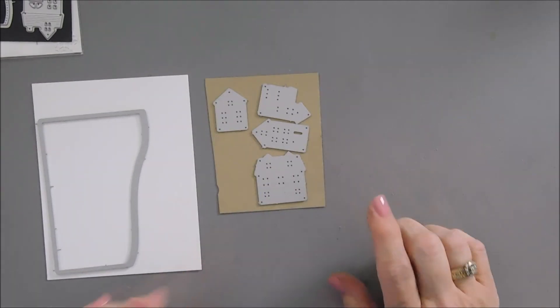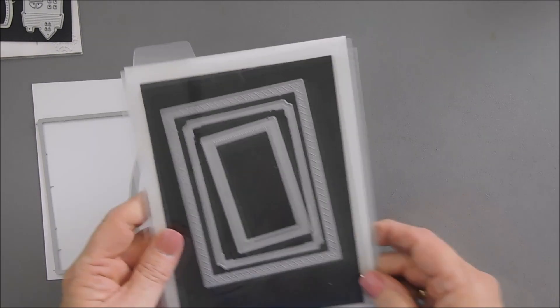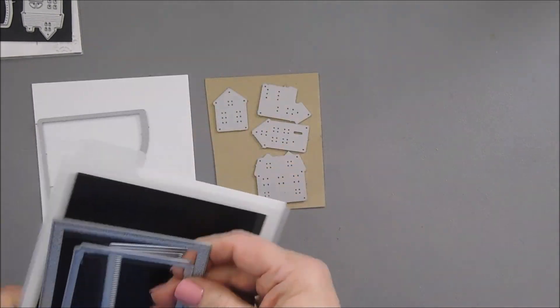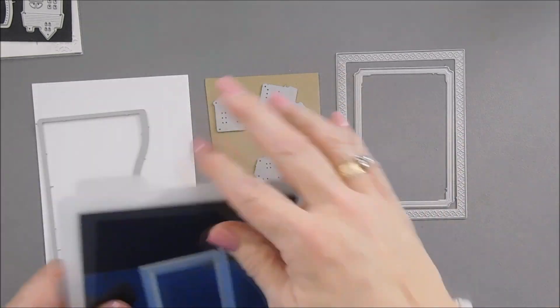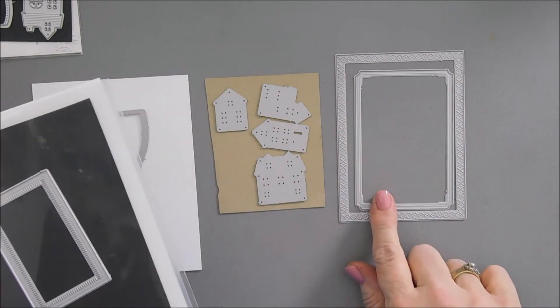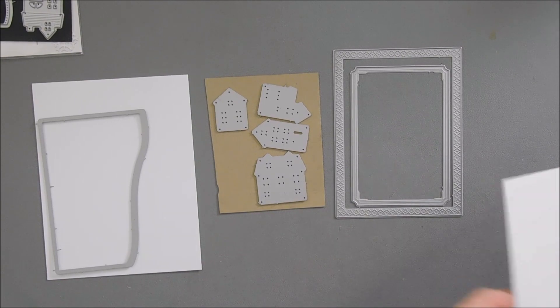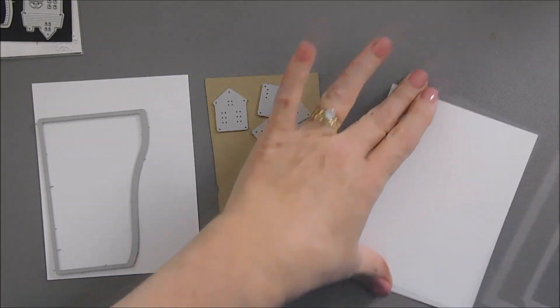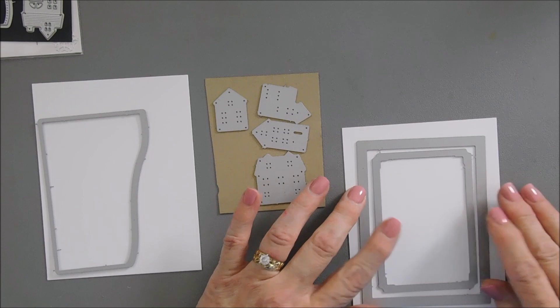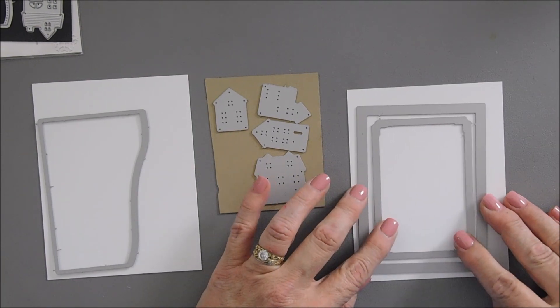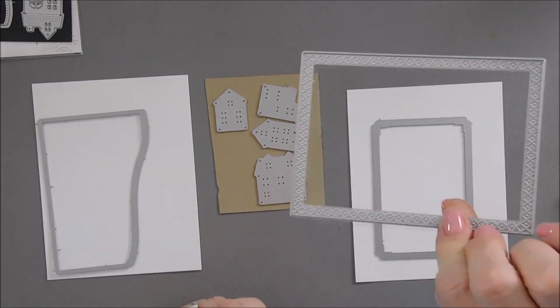While we're die cutting, I'm going to bring in a brand new die set. This is the Love to Layer Rectangles. I like this because you can create a frame with it. So I'm going to take the two largest, use some white cardstock, layer them together so I can create a frame. And then I'm going to die cut out just the background one too.